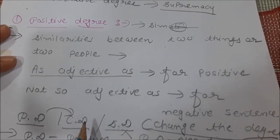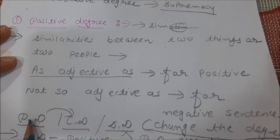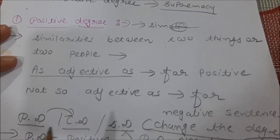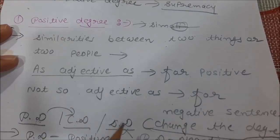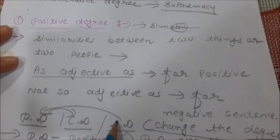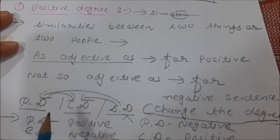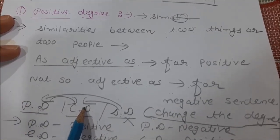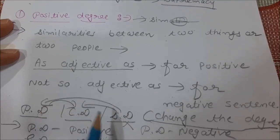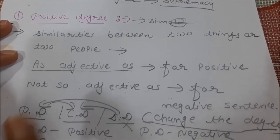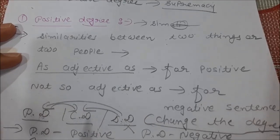Now I will tell you how to turn from PD to CD, CD to PD, ST to PD, and ST to CD. So there are four types: PD to CD, CD to PD, ST to PD, and ST to CD — four methods in total. I will tell you how to turn from one to another later on.